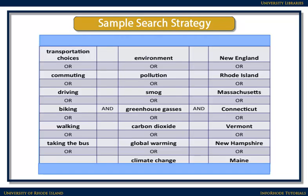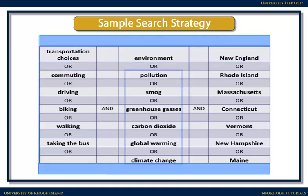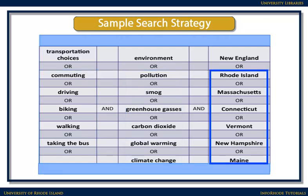Here's a sample search strategy for our research topic on how transportation choices affect the environment in New England. We've pulled out the main ideas for our research — transportation choices, environment, and New England — and put them at the tops of columns. Below each topic, we've listed possible synonyms we can use for searching. You can do this as well for your own research.